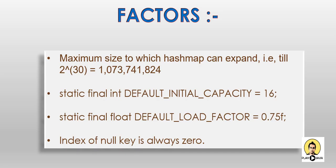There are certain factors a developer should know about HashMap. The maximum size to which a HashMap can expand is 2 to the power of 30. The default initial capacity is 16 — that is, from index 0 to index 15. The load factor is 0.75, so when you multiply 0.75 by 16 you get 12 — whenever 12 buckets get filled, the bucket size increases. The index of the null key is always 0, so a null key is stored in the bucket with index 0.